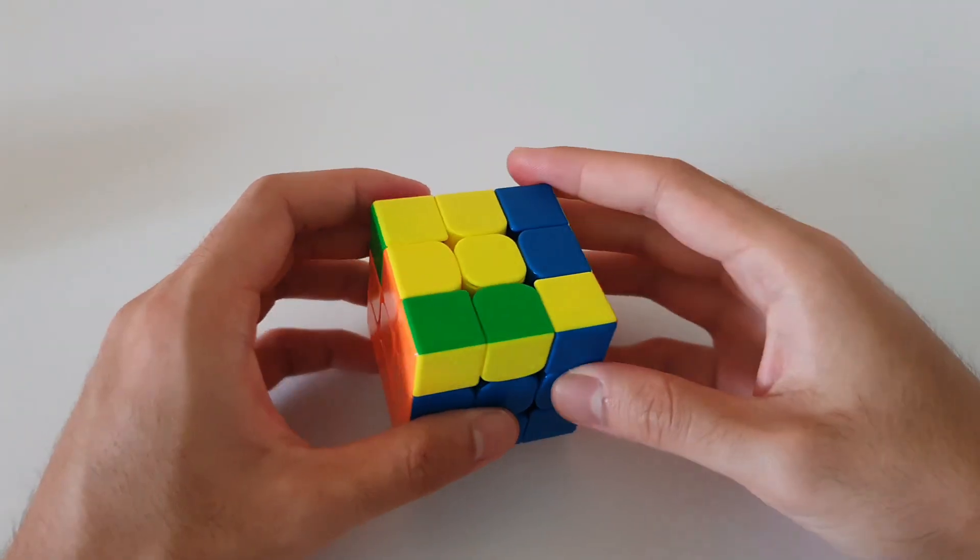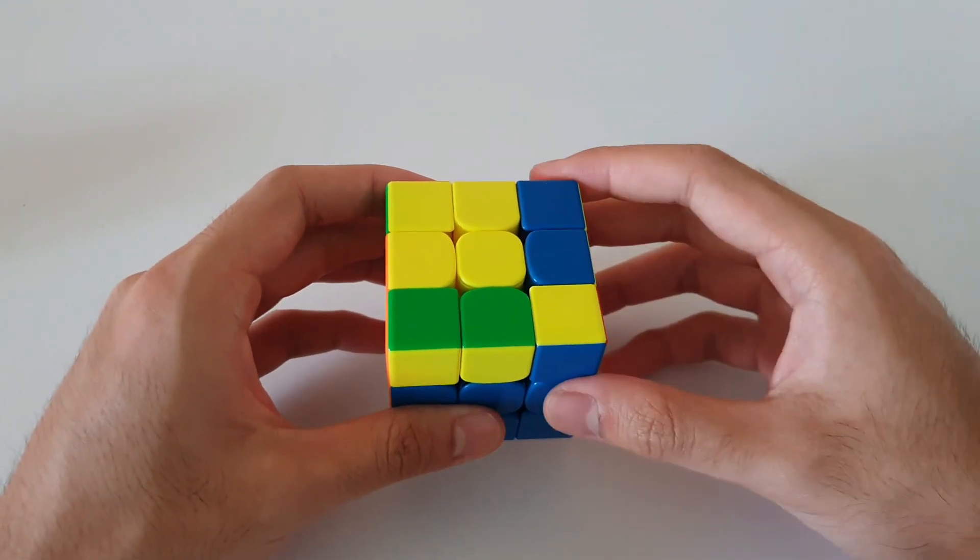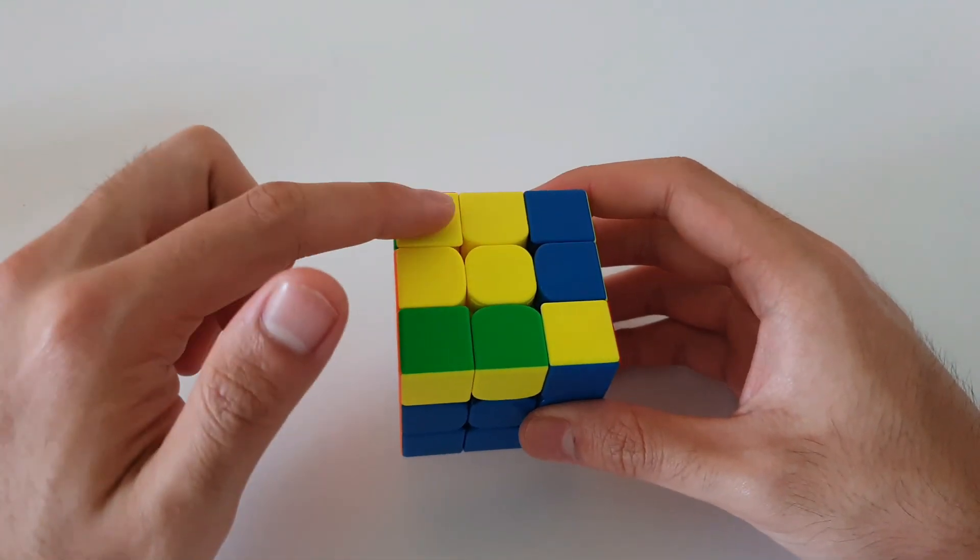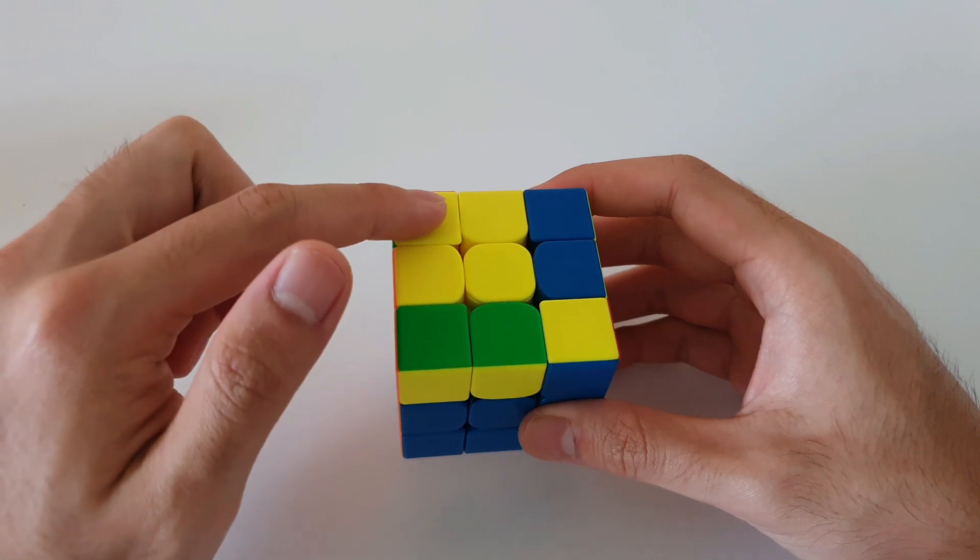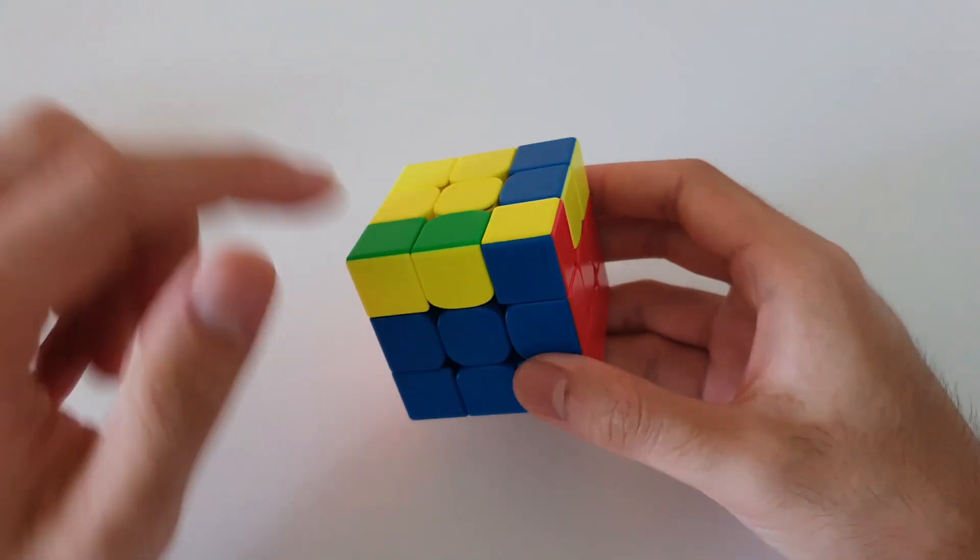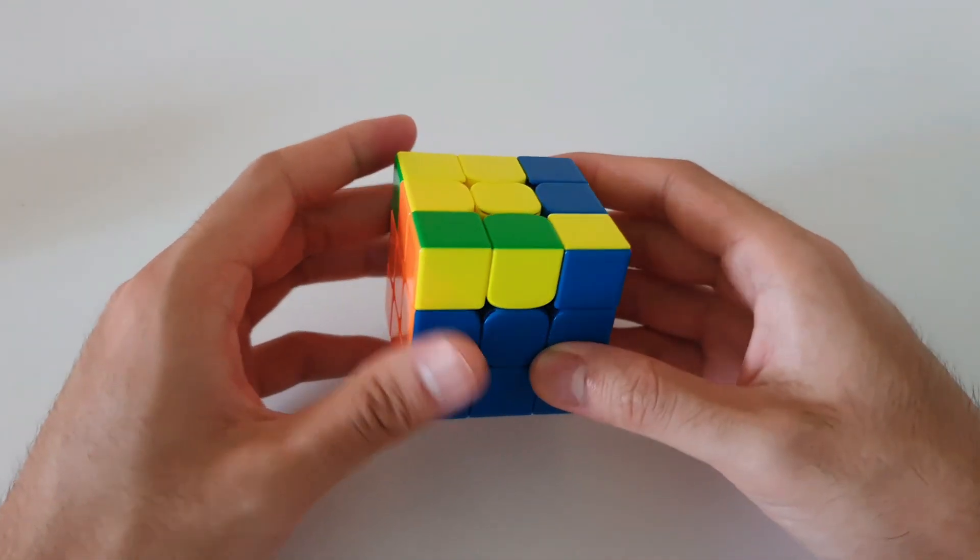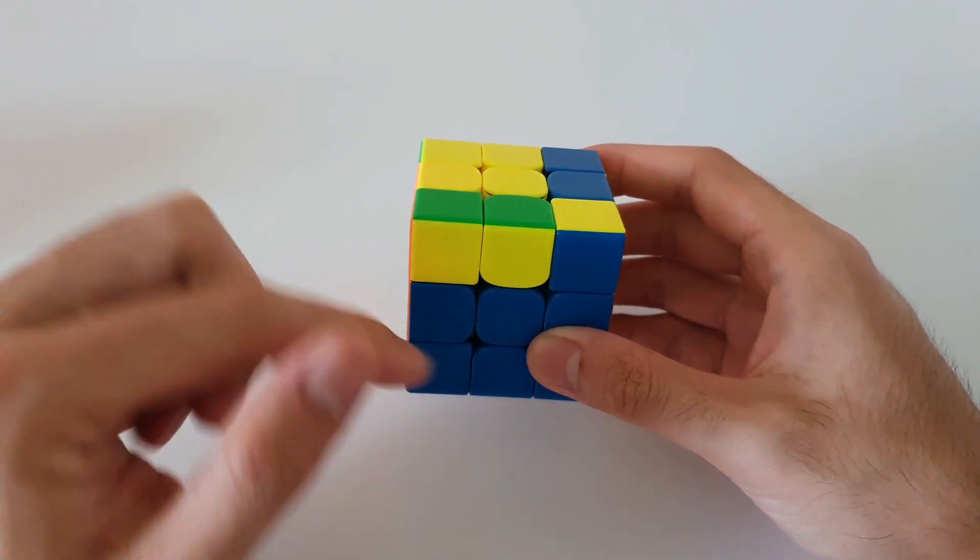So the third case for this video will be this fish-shaped case here. So this case differs from the previous cases in that there's one extra corner that is oriented on the top layer. Otherwise, you can recognize it as having two of these 2x1 bars on the sides here.